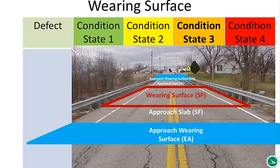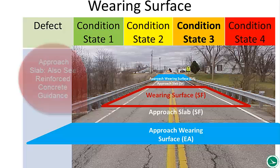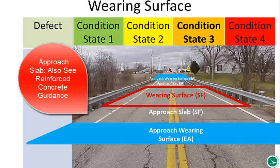Approach wearing surface is measured as 'each,' as termed by committee. Approach slab is square footage. For approach slabs, we're largely looking for any sort of settlement or impact due to the reinforced slab underneath. But certainly use the wearing surface guidance to help code and get the appropriate rating for approach slabs as well — it's a portion on top.